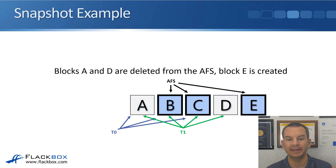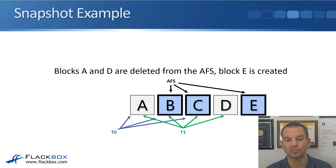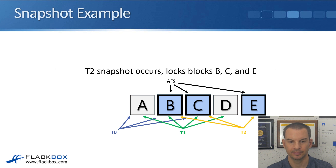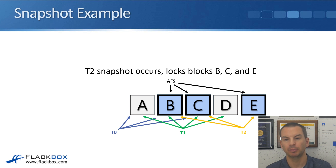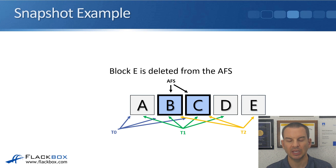Next, blocks A and D are deleted from the active file system and block E is created. The active file system now consists of blocks B, C, and E. The snapshots never change: T0 always contains pointers to blocks A, B, and C; T1 always contains pointers to blocks A, B, C, and D. We then take a T2 snapshot — pointers to blocks B, C, and E. Then block E is deleted from the active file system.